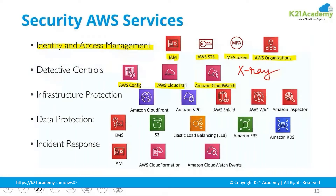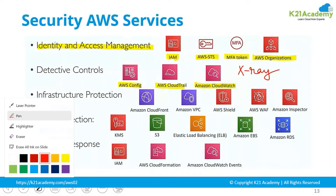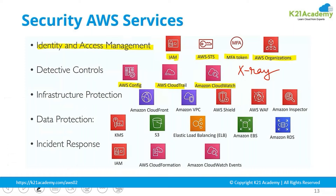For infrastructure protection, you can protect your infrastructure using Inspector, WAF, and Shield. You can create an isolated environment using VPC. You can also add a caching layer using CloudFront to protect the origin of your data from being directly accessed.